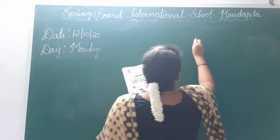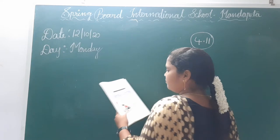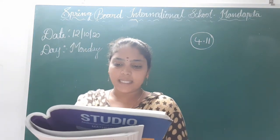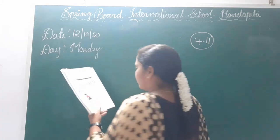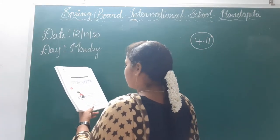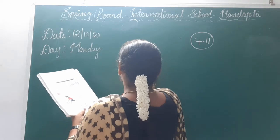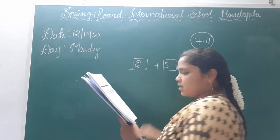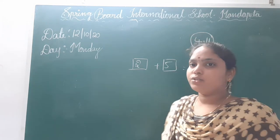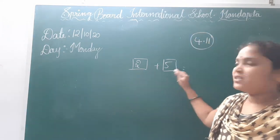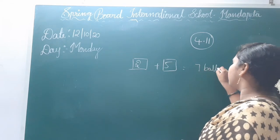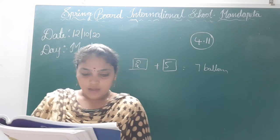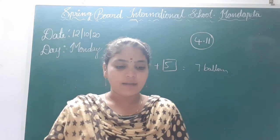Tina and Maya are drawing balloons in their notebook. Tina drew 2 balloons on one page and 5 balloons on another page. So total how many balloons did she draw? 2 plus 5 is 7 balloons. In the first page she drew 2 balloons and in the second page 5 balloons — totally 7 balloons.